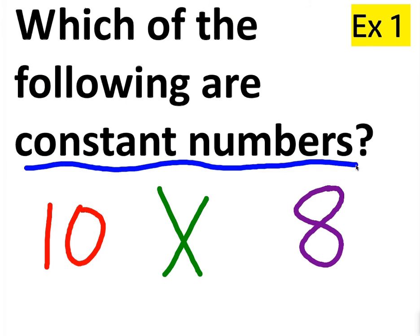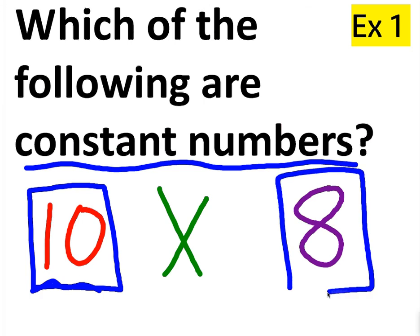Let's look at some examples. Which of the following are constant numbers? So basically, I'm just going to square off the ones that are constant. First one we have is 10. Is that a constant number? Well, is it equal to 11? Is it equal to 12? No, it's only equal to 10. Therefore, it is a constant number. Next we have X. X is not a constant number. X is a variable. A variable is a number that changes over time. It can take on many different values. So we're not going to square off X, but we are going to square off 8. 8 is also a constant number. It cannot change.